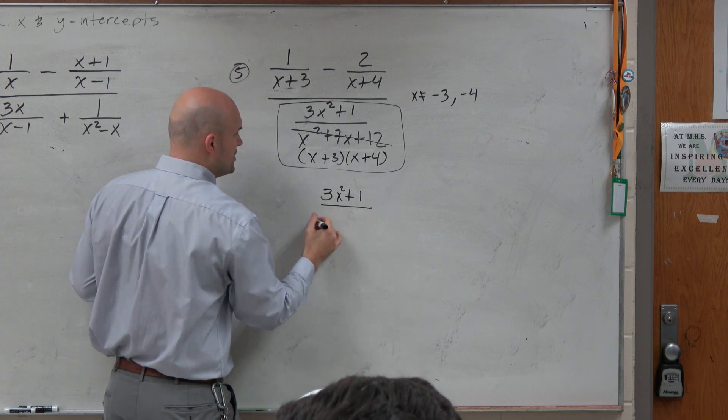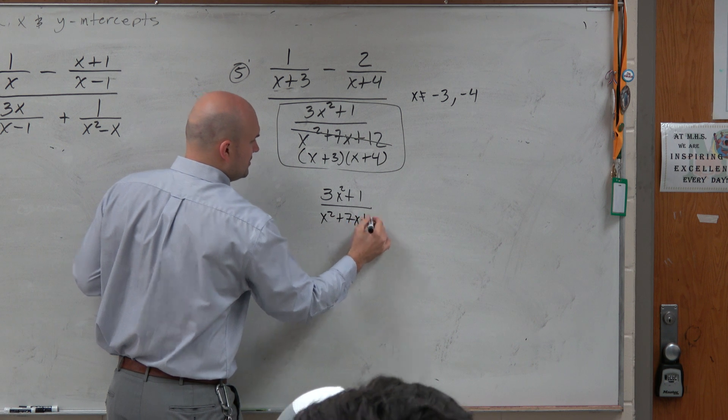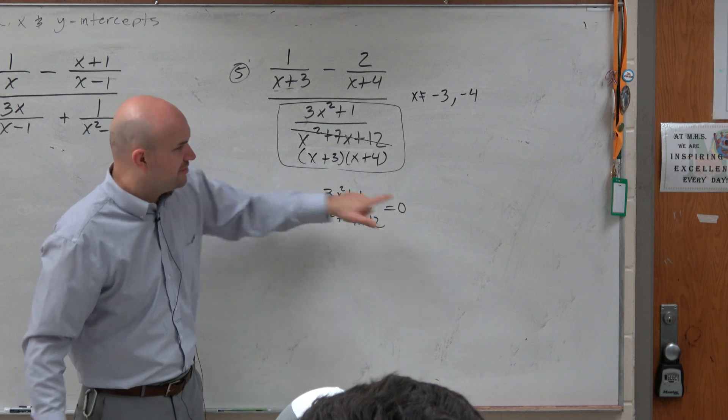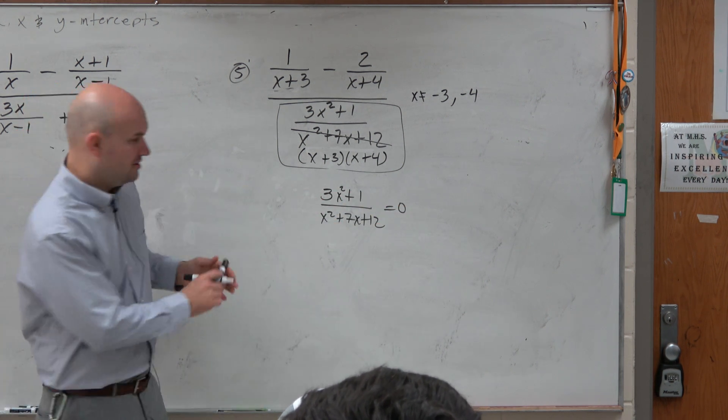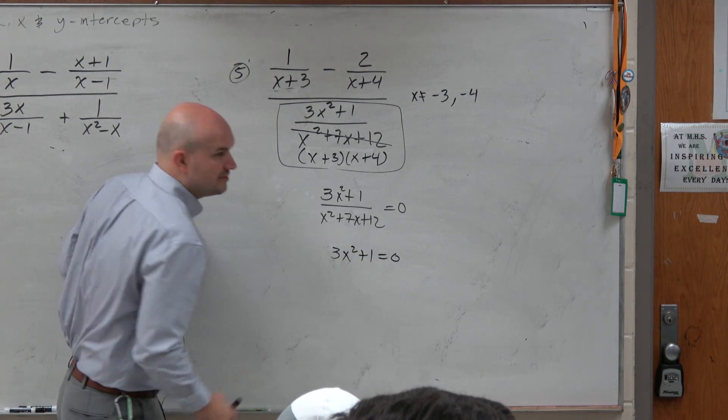Now again, what you guys will notice is this isn't that big of a deal. If you set this equal to 0, basically, you're multiplying the denominator on both sides. So you really have the numerator equal to 0, correct? So when you solve the numerator equal to 0, does anybody see what we get here?